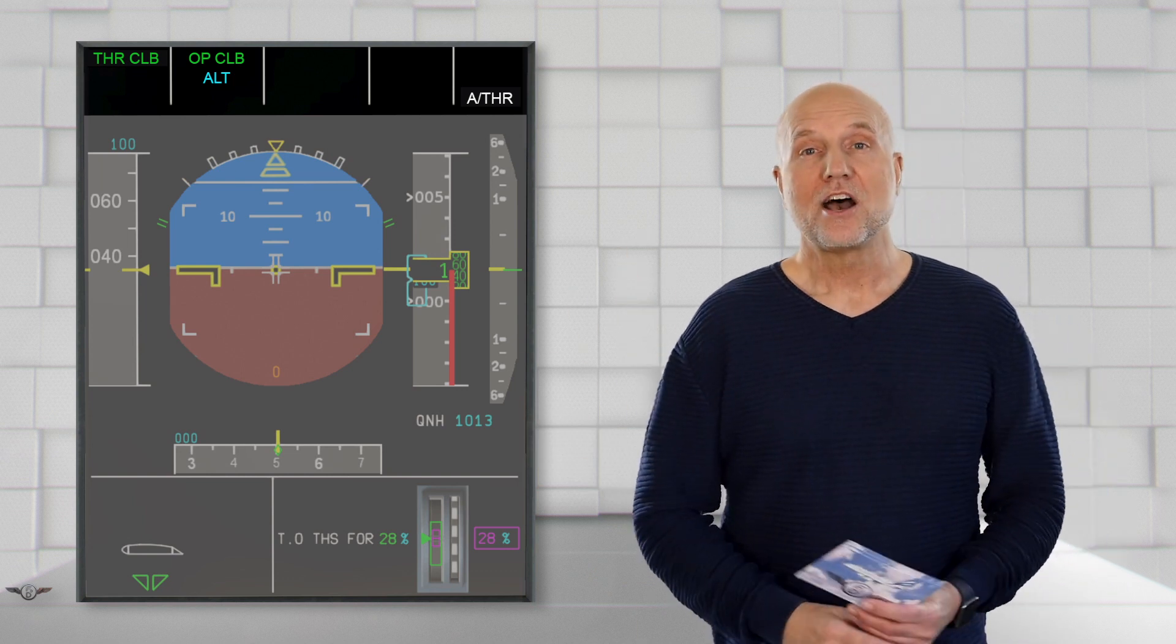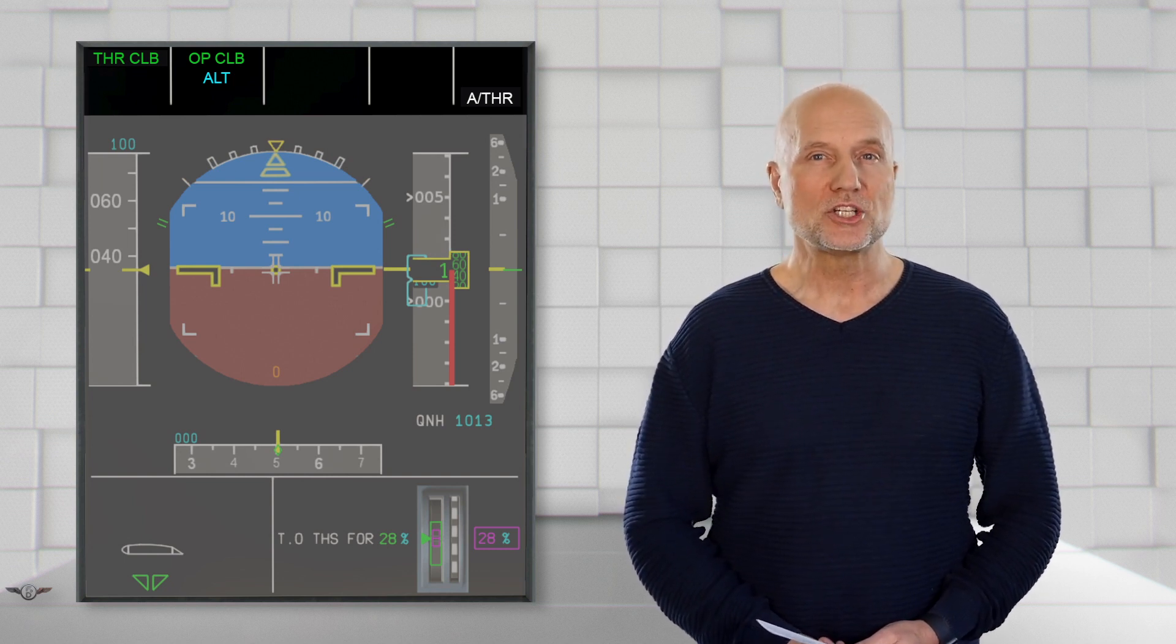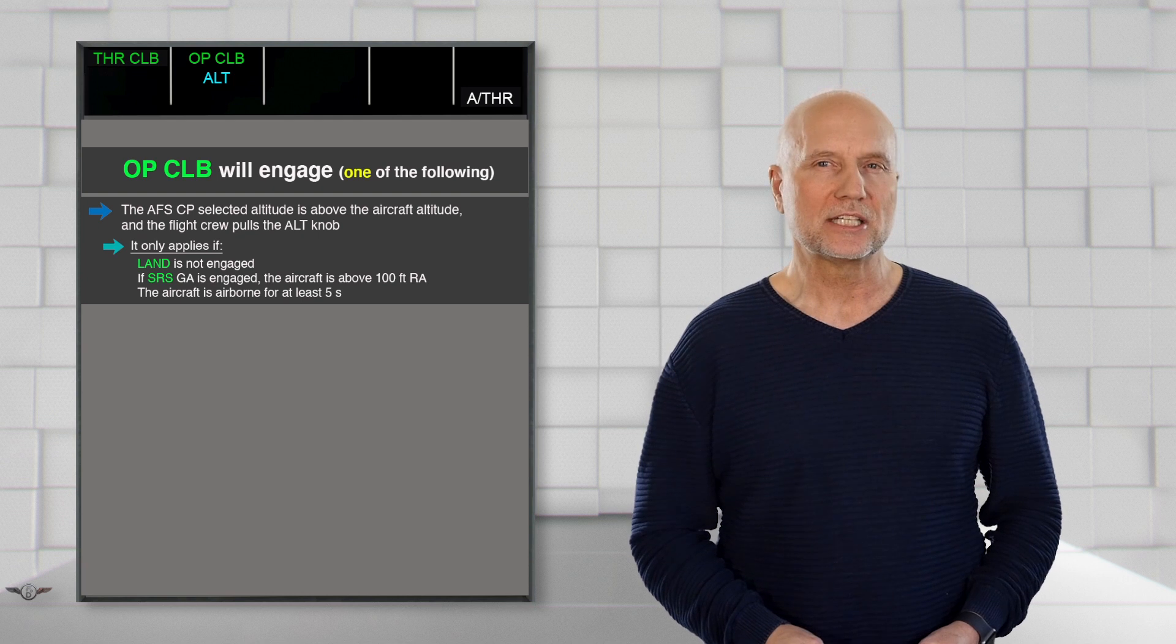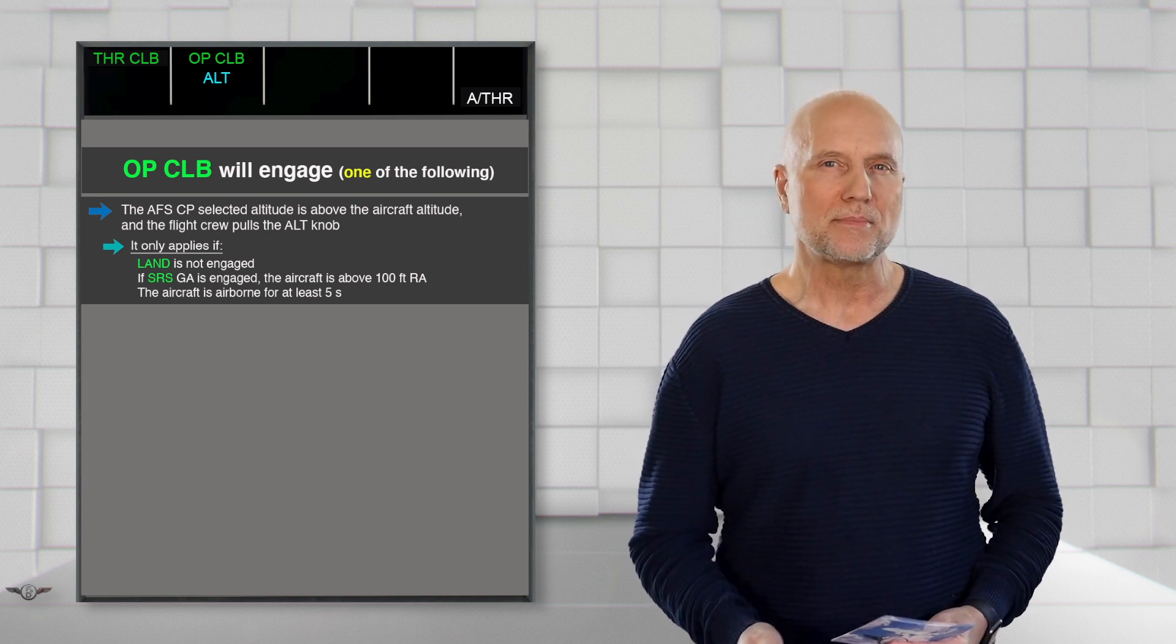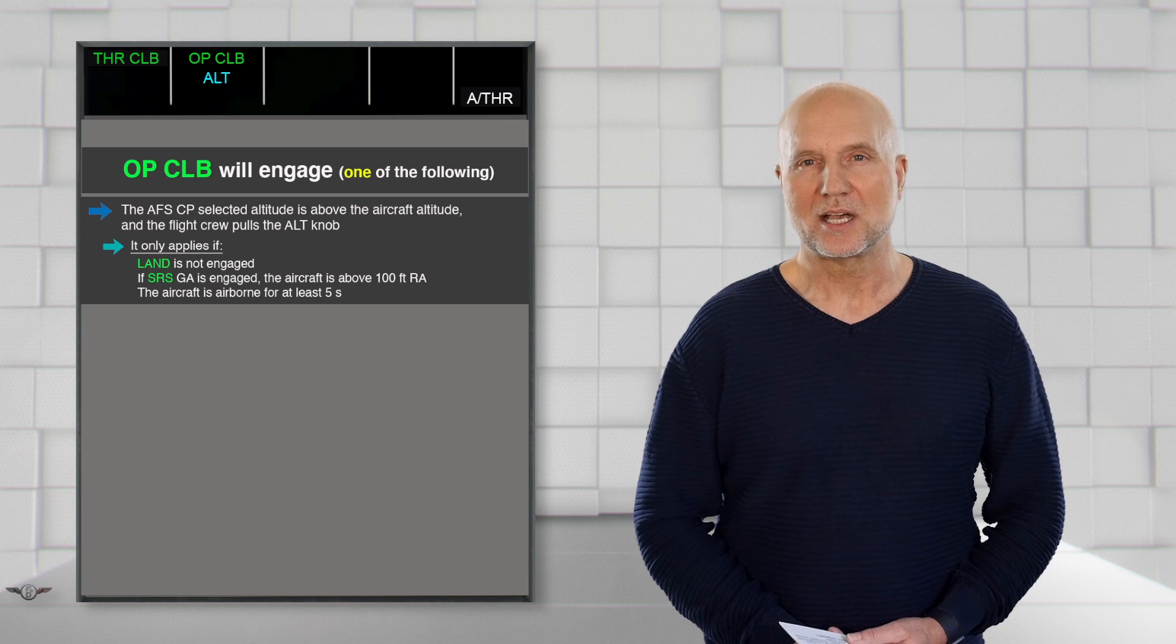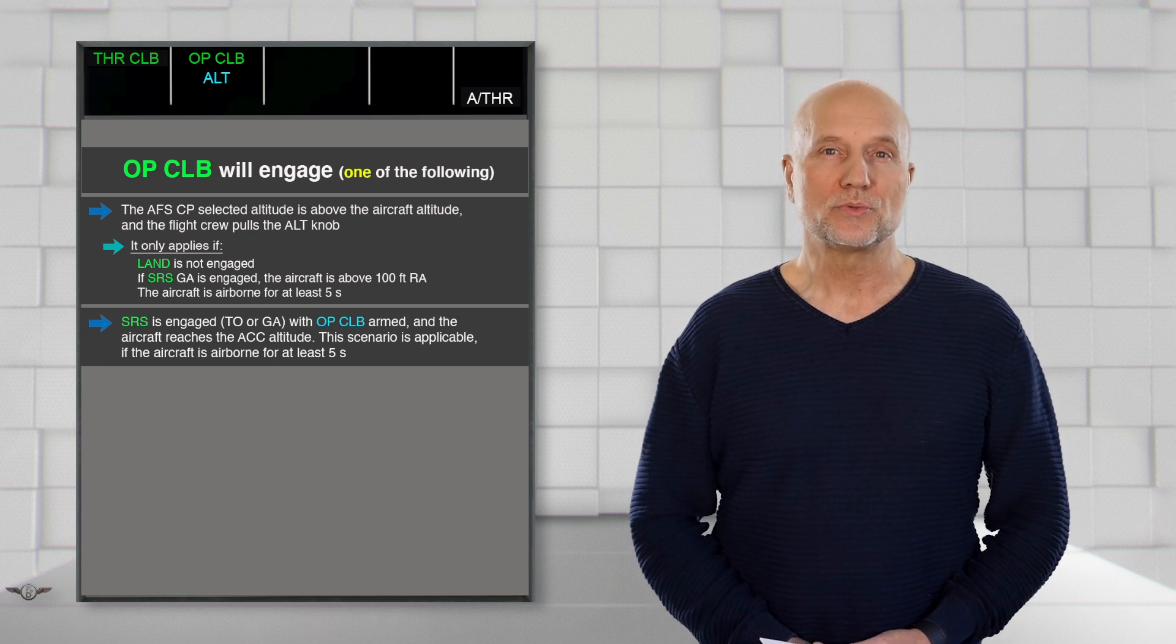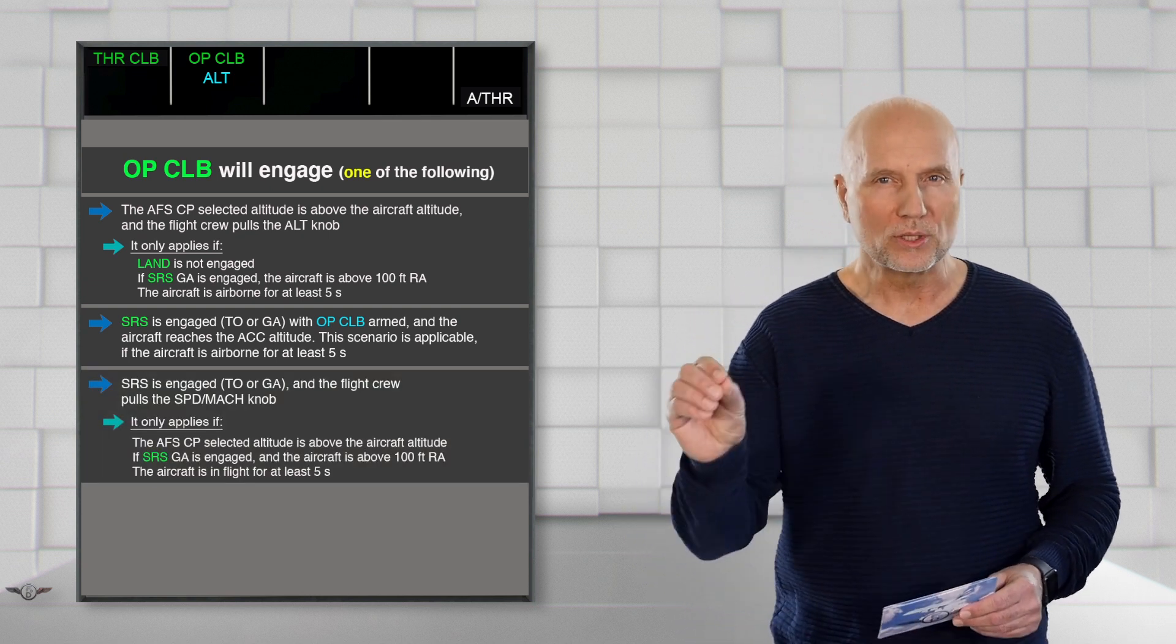Open Climb is a vertical thrust mode, so thrust is not controlling the speed but providing stable climb thrust. Open Climb will engage under the following conditions. On the AFS-CP, an altitude is selected which is above the aircraft altitude and the pilot flying pulls the altitude selector knob, but LAND mode must not be engaged. In case SRS go-around is presently engaged, the aircraft needs to be above 100 feet radio altimeter height. And last but not least, the aircraft has to be minimum time of 5 seconds airborne. Open Climb will engage as well when presently in SRS and the aircraft reaches the acceleration altitude with Open Climb armed before.